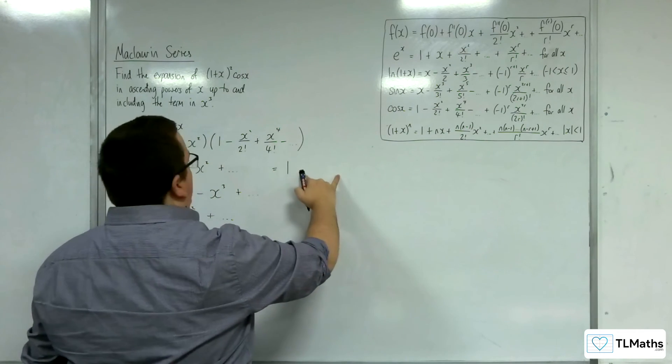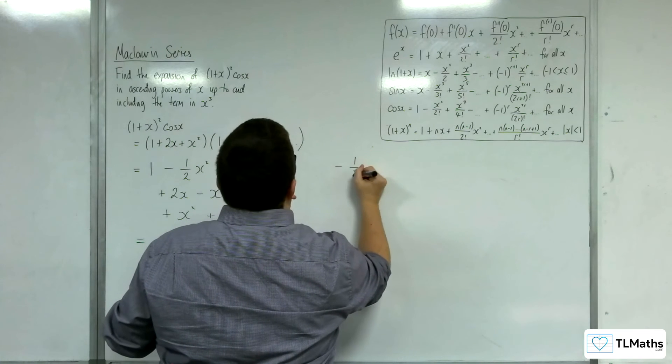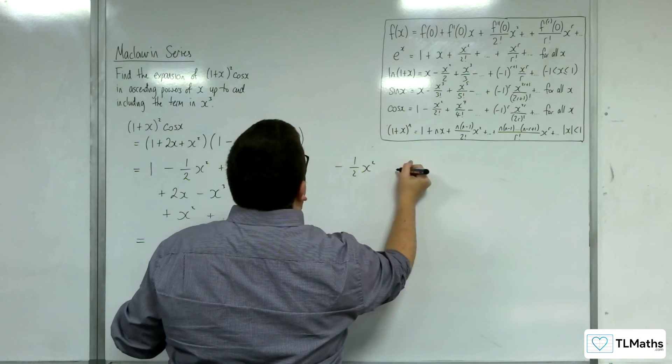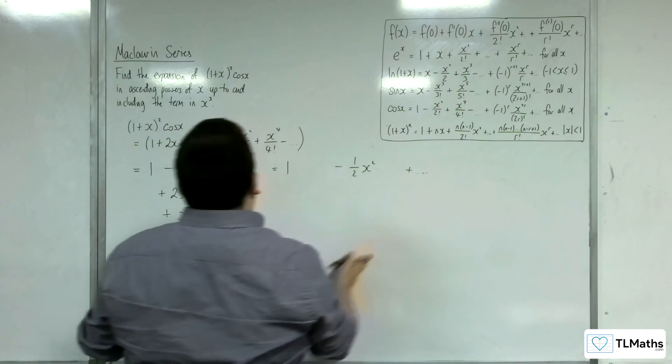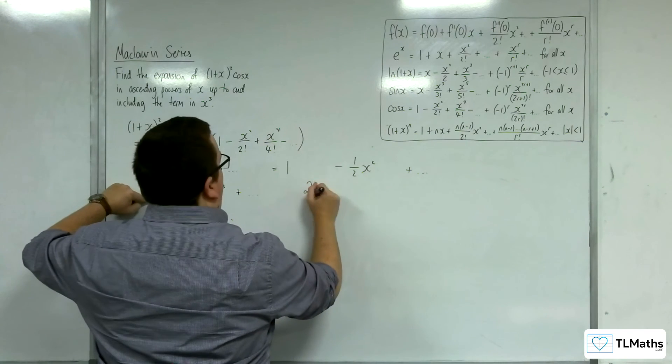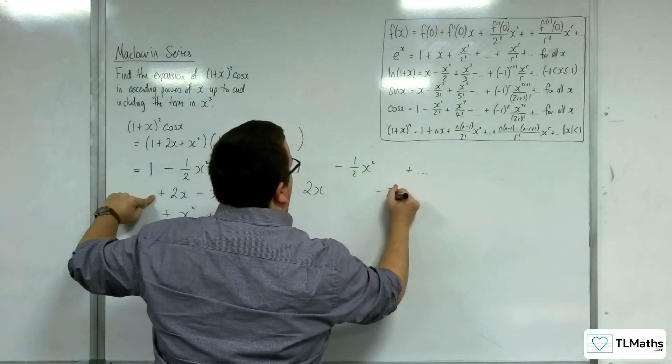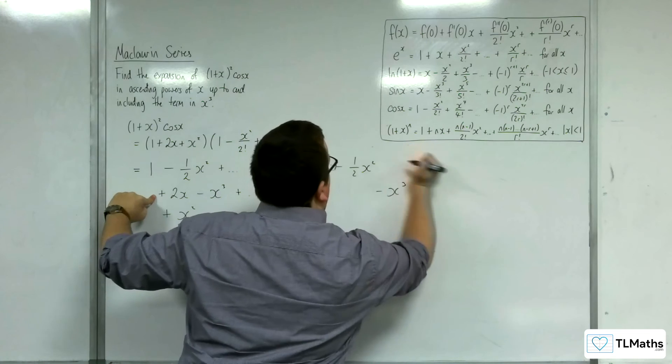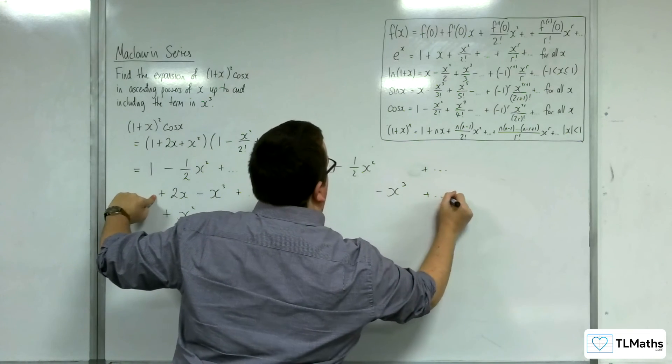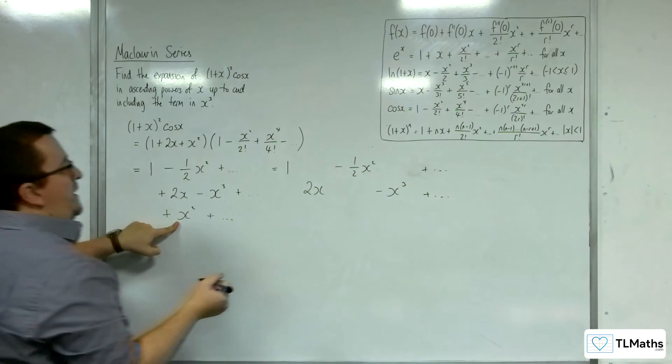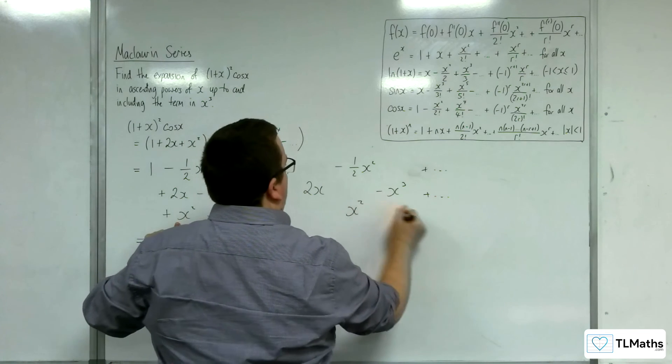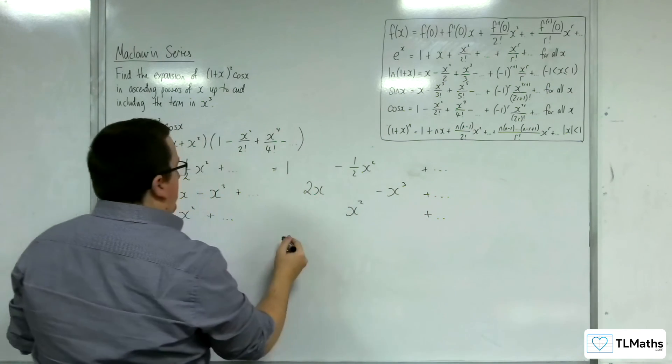and know that you're going to have something x there, and then have the minus half x squared plus other terms. And then the next term is 2x, and then take away x cubed plus other terms. And then you've got the x squared plus other terms.